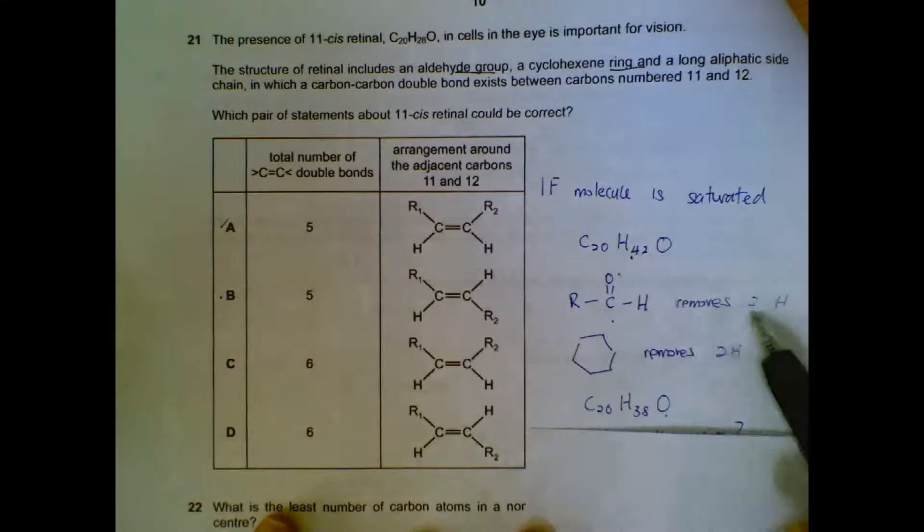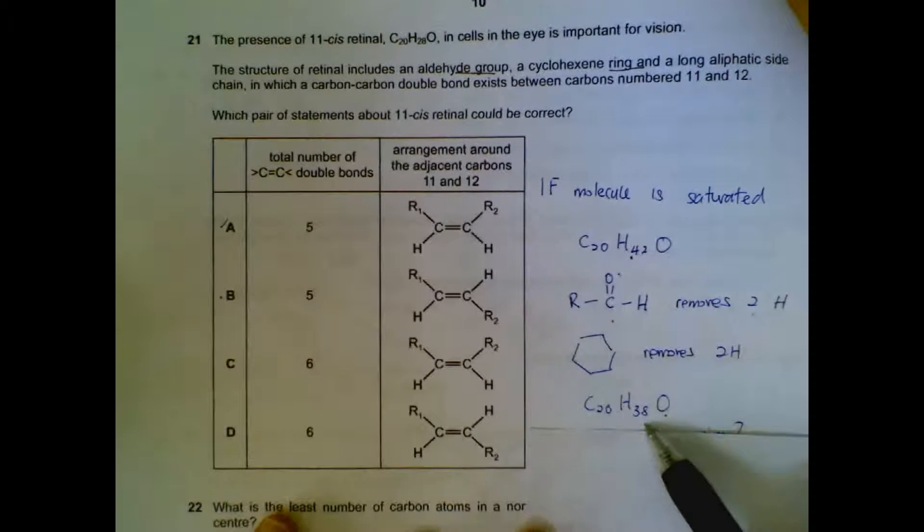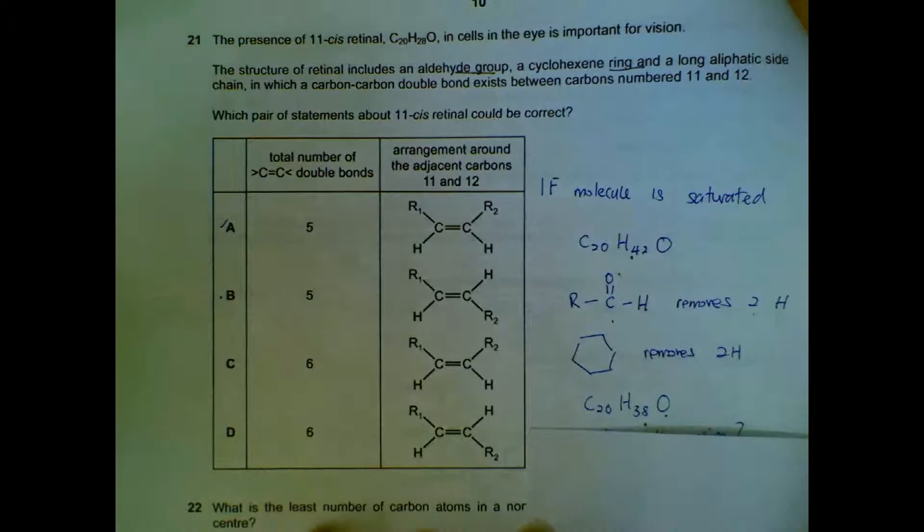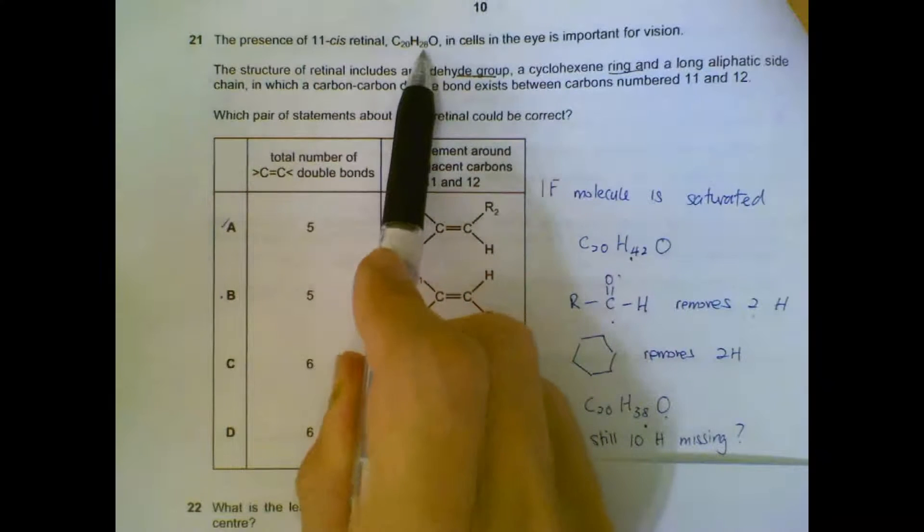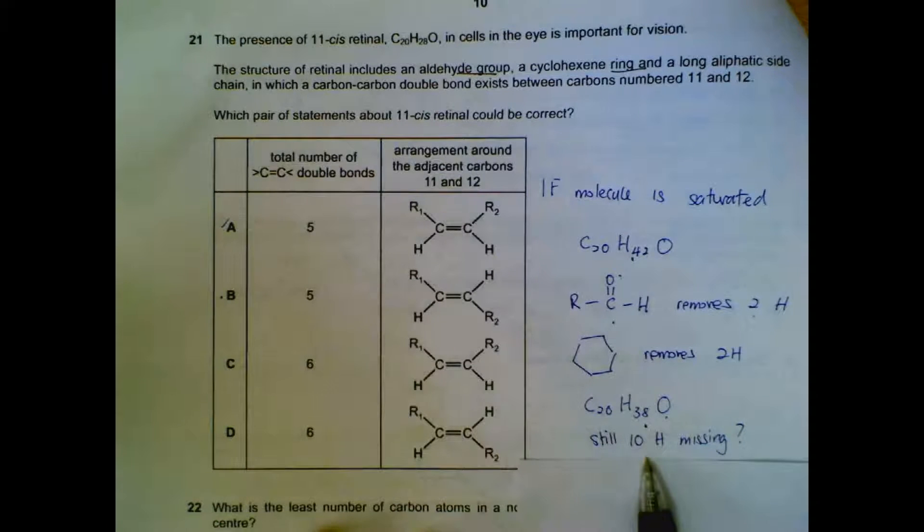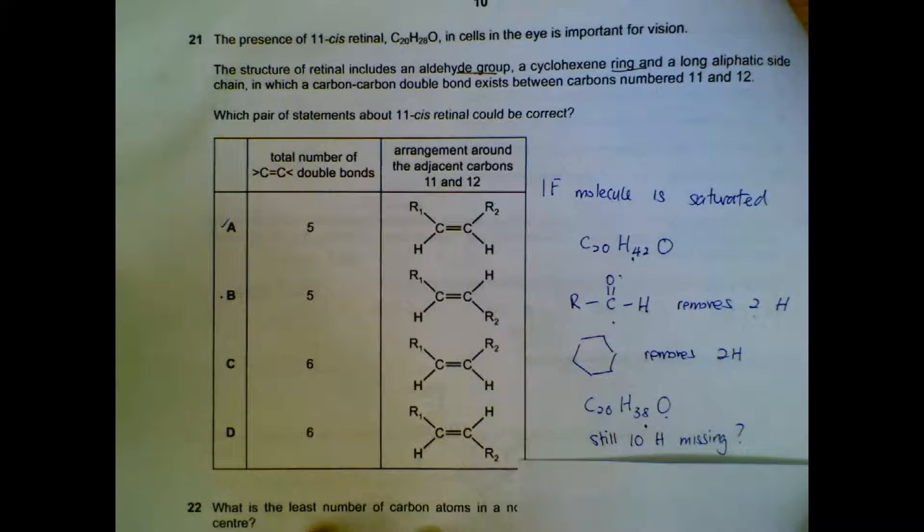Because taken away 2, taken away 2, 42 minus 4, we get 38. Then we compare to our actual structure. We have only 28 hydrogen. So why are there 10 hydrogen missing? There are 10 hydrogen missing because we have double bonds. 2 hydrogen will be missing from each double bond. We have 10 hydrogen missing. It means that we have 5 double bonds.